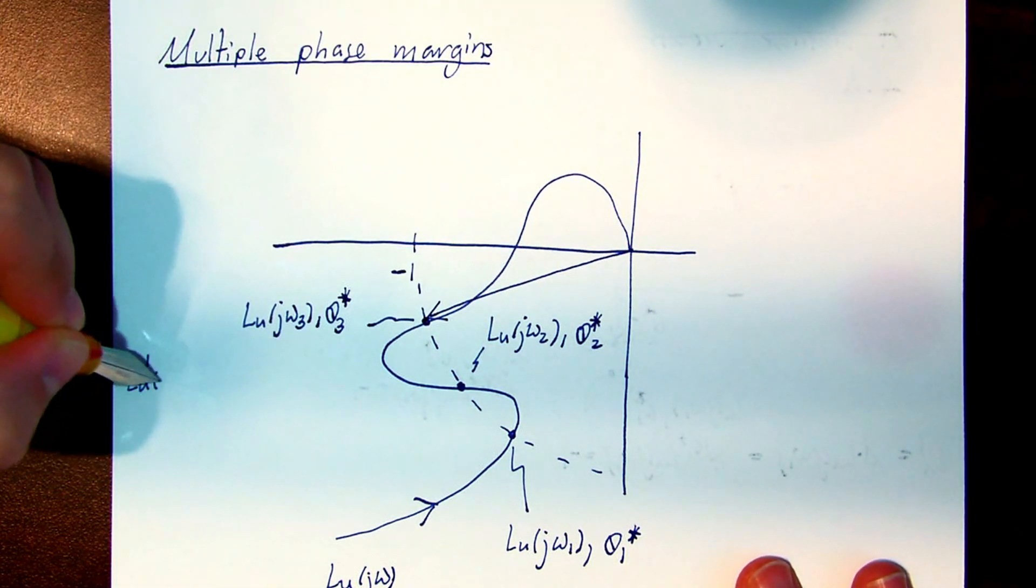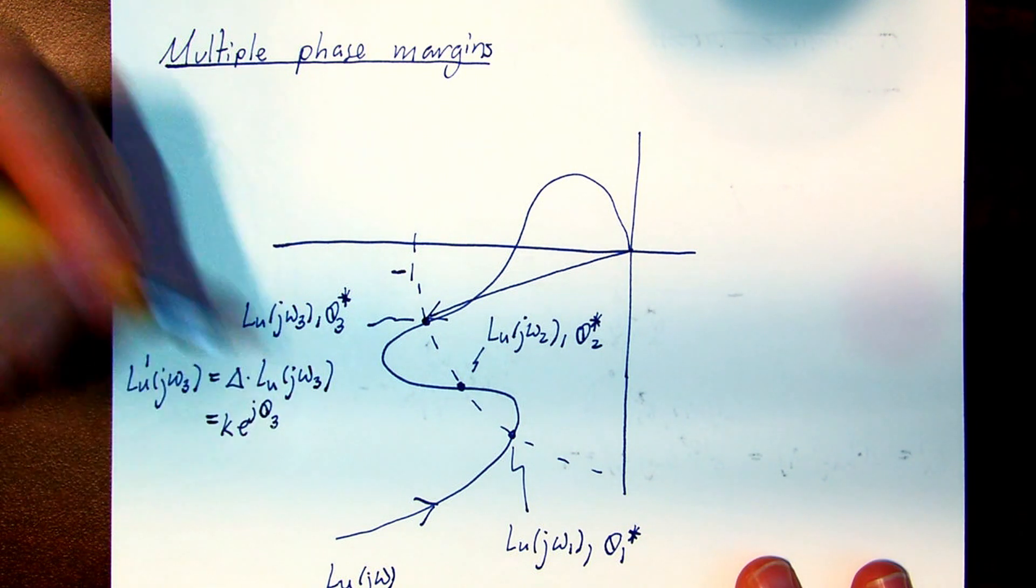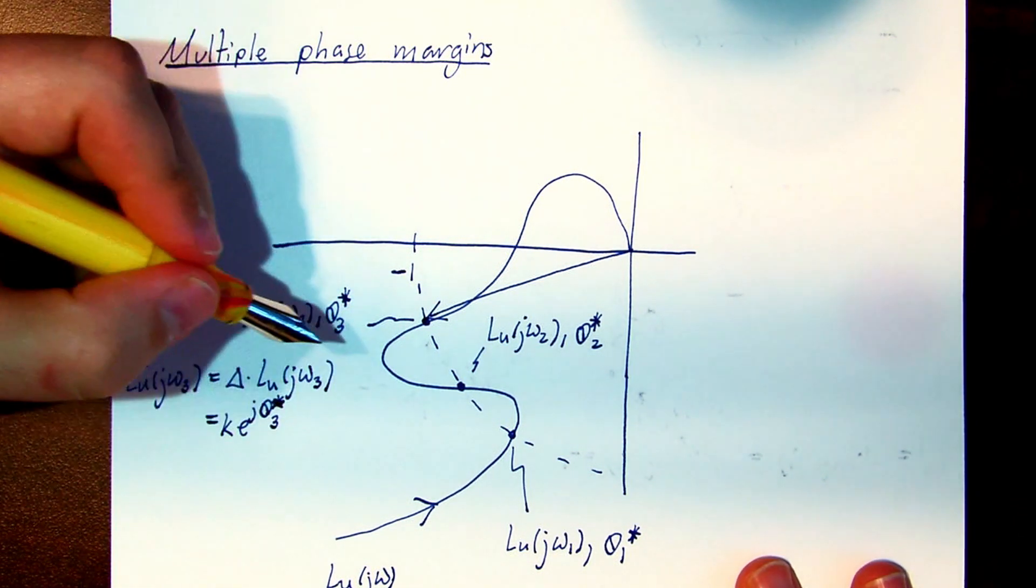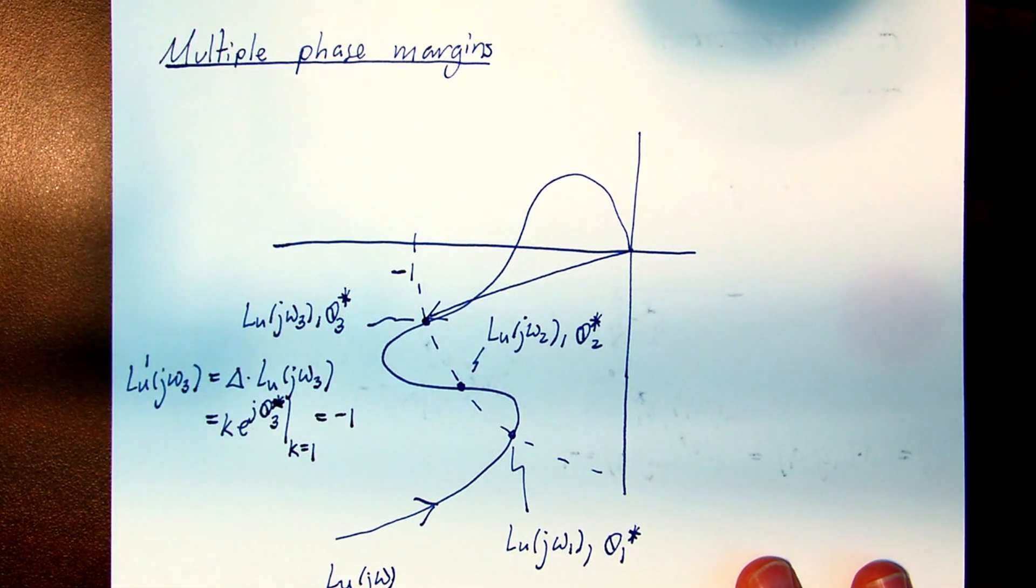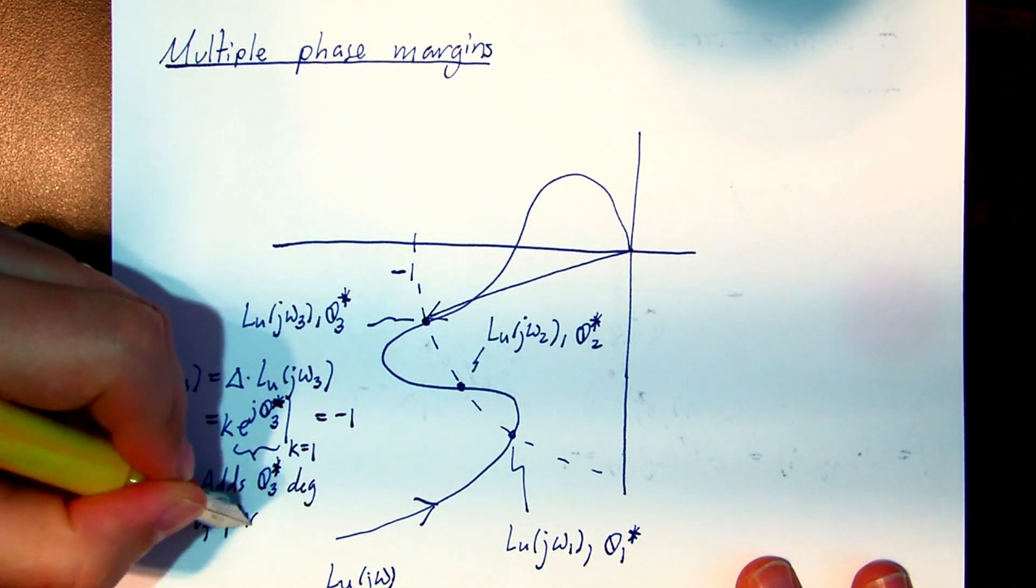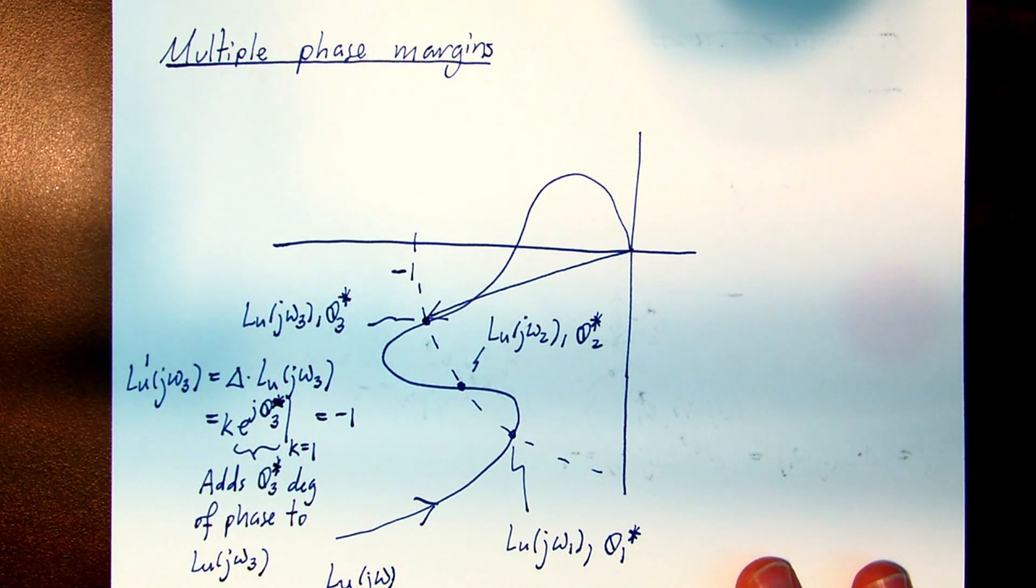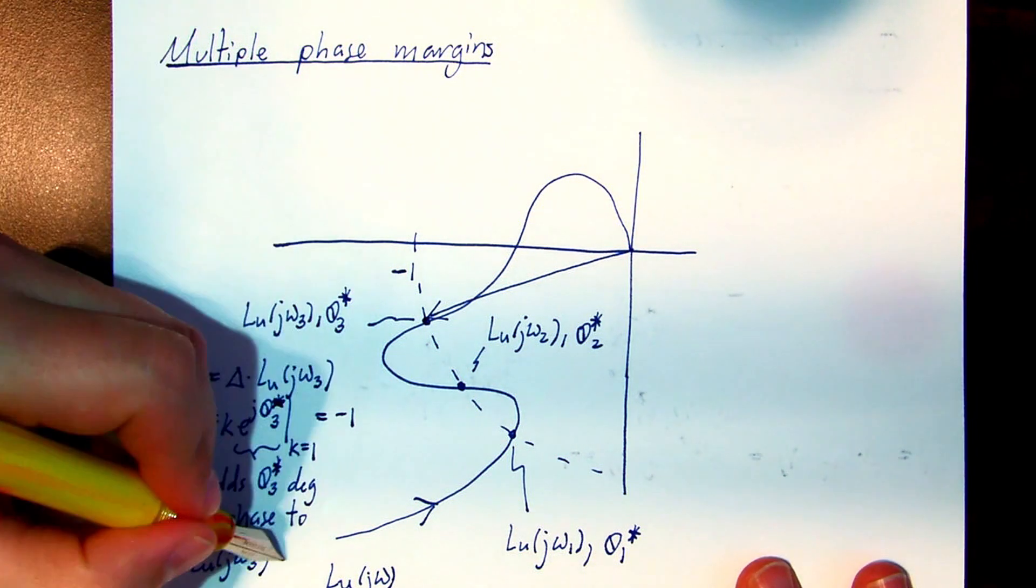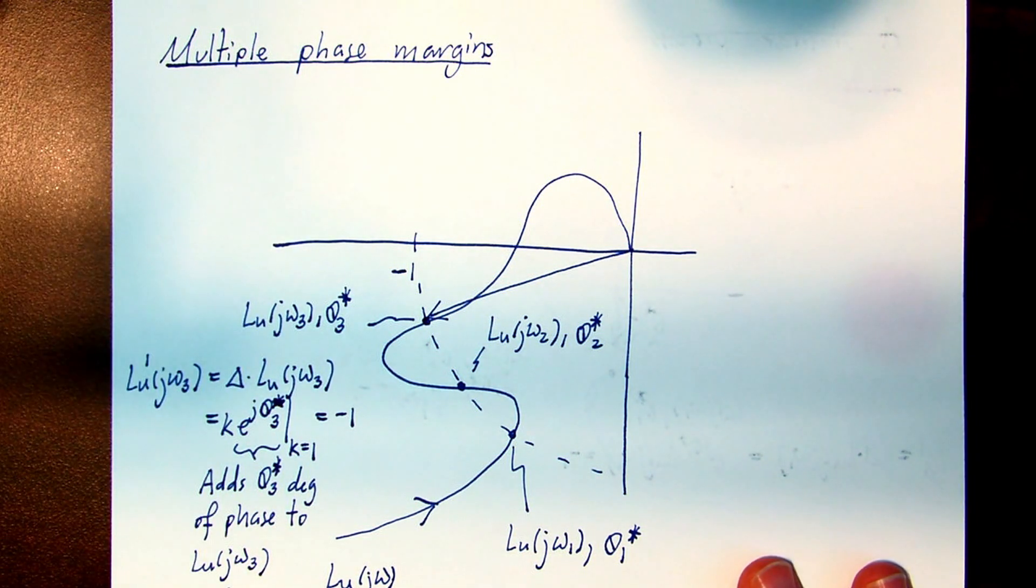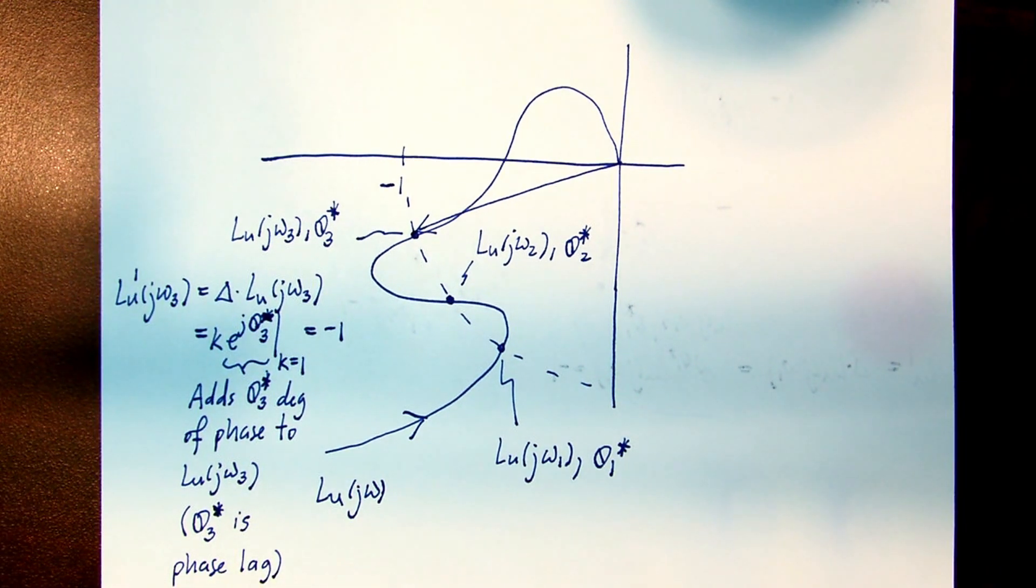Now let's take a look at perturbing the loop gain at omega 3 with the disturbance model delta, so that it's equal to minus 1, or is on the critical point. We essentially insert a pure delay of theta 3 star into the loop gain to cause that rotation of the phasor at omega 3 star onto the critical point. The effect is to rotate the phasor from minus 170 degrees roughly by inspection to minus 180 degrees, again to the point of marginal instability, where the phasor of the perturbed loop gain is along the negative real axis.